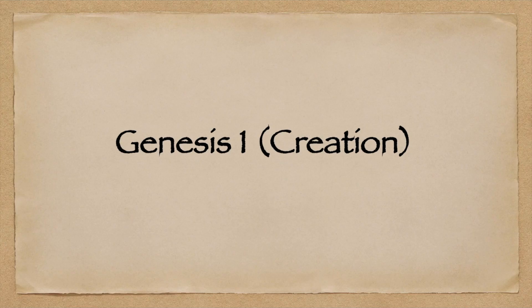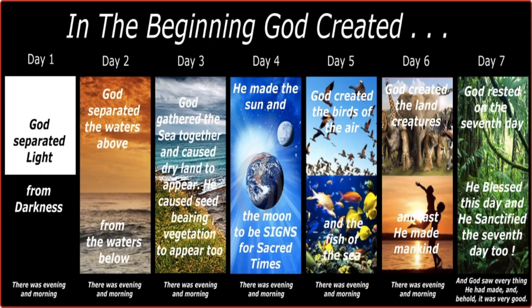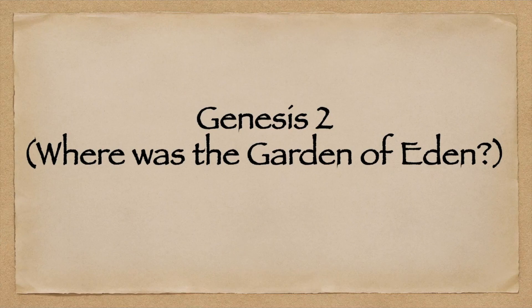Genesis chapter 1 covers creationism. If you take a literal approach to the scriptures, the Most High created the earth in six days and rested on the seventh. Genesis chapter 2 covers the Garden of Eden. Where was the Garden of Eden?